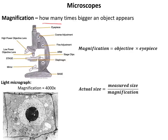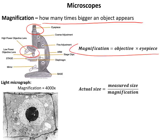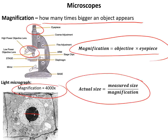Microscopes: the magnification of a microscope is how many times bigger an object appears. To work out the magnification, you multiply the magnification of the eyepiece lens by the magnification of the objective lens using that equation. To find the size of something from a micrograph, you measure its actual size in millimetres, then divide by the magnification. You may need to multiply by a thousand to convert into micrometres.